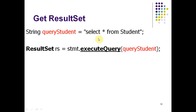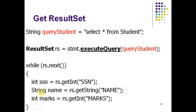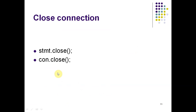The result of executeQuery is stored in a ResultSet: ResultSet rs = stmt.executeQuery(queryStudent). This query extracts all records from the student table into rs. We then use a while loop — while(rs.next()) — since rs has multiple rows. We extract SSN (integer), name (String), and marks (integer) using rs.getXxx() methods. Finally, we close with statement.close() and connection.close().